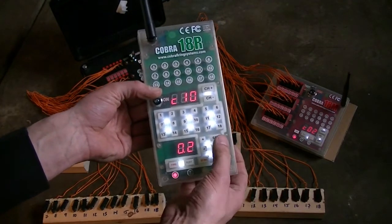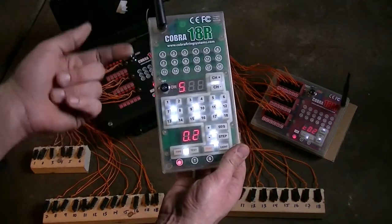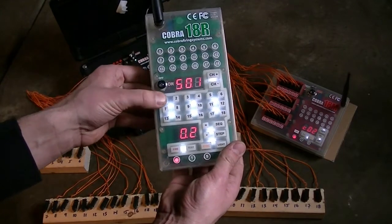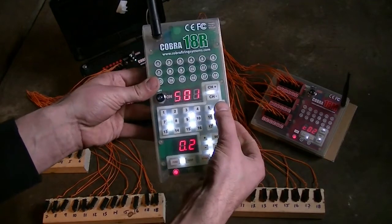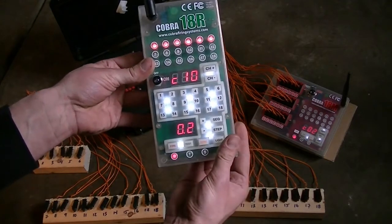Now how it works is you can press the sequence button, then it's going to ask you for the starting and the ending cue. For example, my starting cue would be 1, my ending cue is 6, and then when you're ready to fire that sequence, just press the sequence button again.